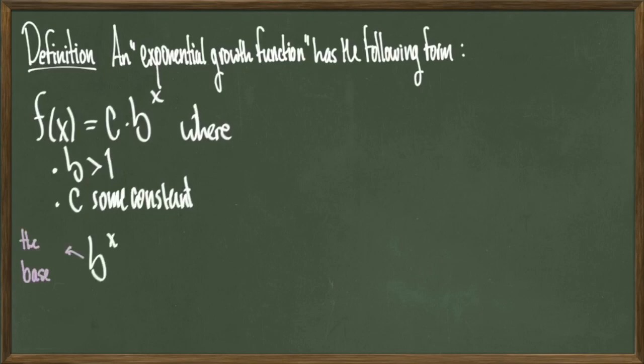For a basic terminology review, remember that b is called the base and x is called the variable exponent. Now, the reason this class of functions is special is because this is very different from a polynomial. With a polynomial, you'd have the variable x raised to a fixed power. Here we have a fixed base raised to a variable power. That's what gives us something distinctly different.